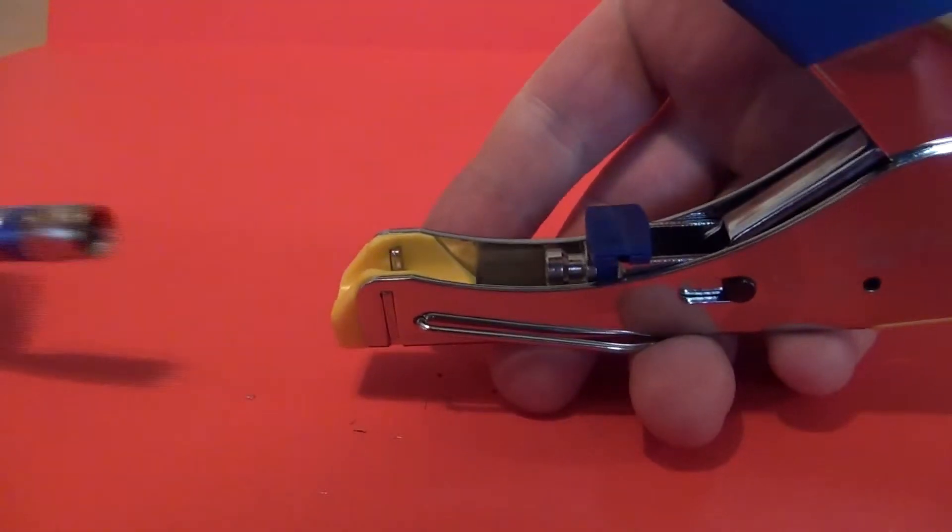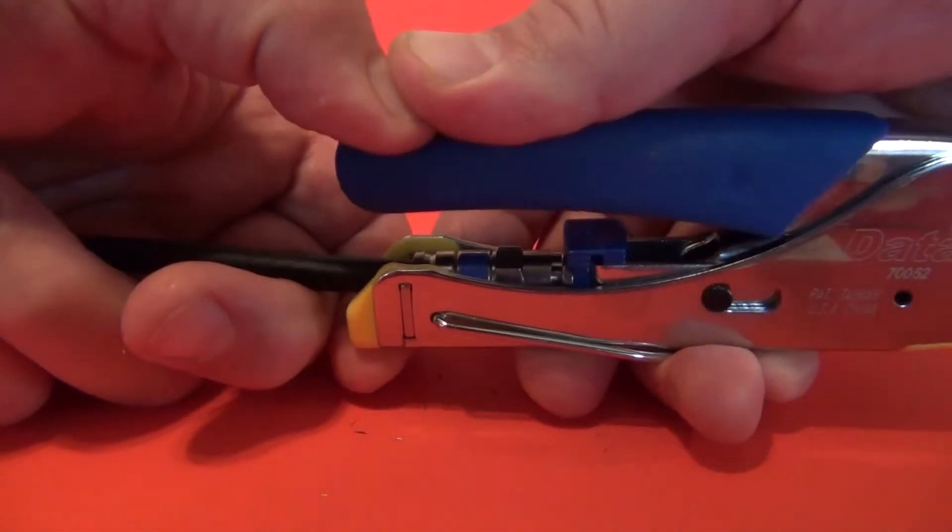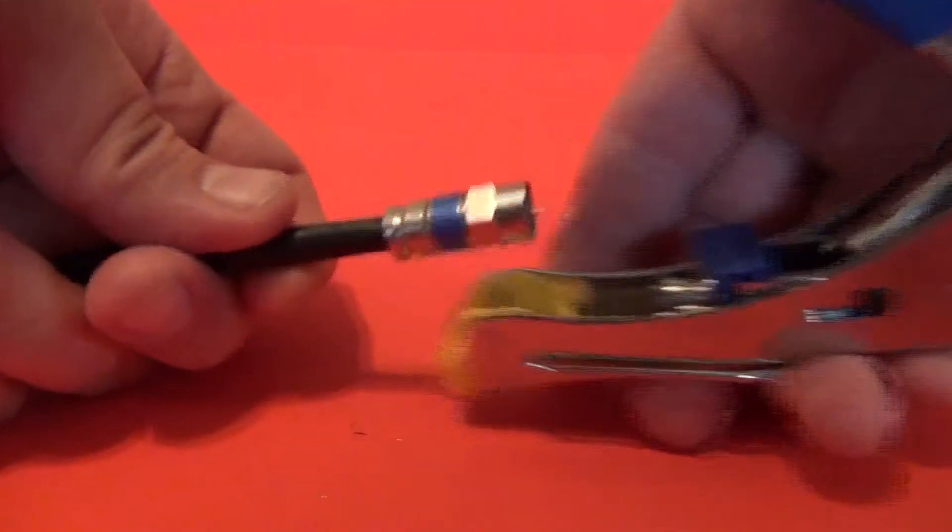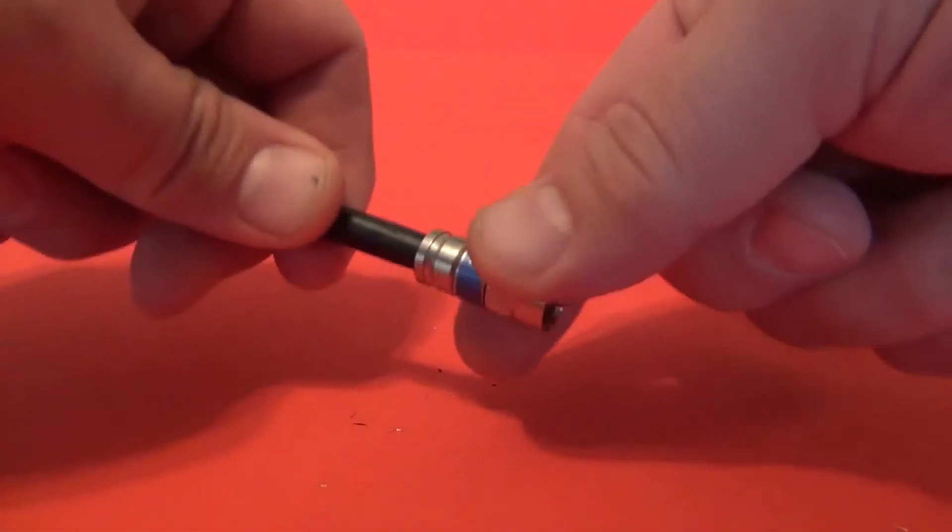Place the F connector into the compression type crimp tool and firmly crimp the connector on. Give your connector a pull or two and make sure that it's crimped onto the cable correctly.